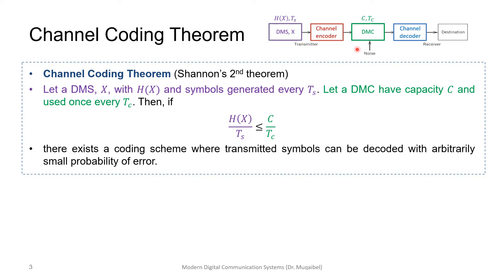I'm showing you the blocks in colors so you can trace the theorem. It says: Let a discrete memoryless source (DMS) have an entropy of H(X)—this is the entropy of the source—and it generates symbols every T_s units of time.